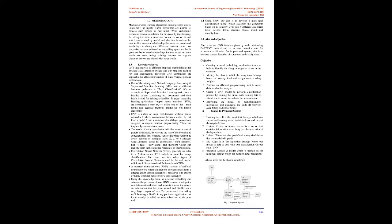1.3 Literature Survey. Let's take an analysis of different proposed methodologies for efficient class detection in our proposed method for text classification. Different CNN approaches are applicable for efficient prediction of class. One of the widely used natural language processing and supervised machine learning (ML) tasks in different business problems is text classification. It's an example of supervised machine learning task since a labeled dataset containing text documents and their labels is used for training a classifier. In today's machine learning applications, Support Vector Machines (SVM) are considered a must-try. It offers one of the most robust and accurate methods among all well-known algorithms.